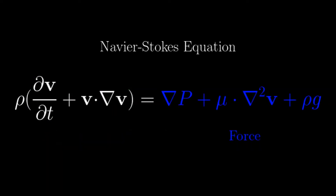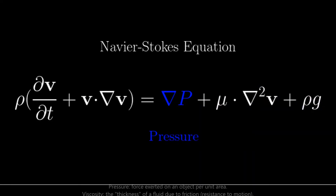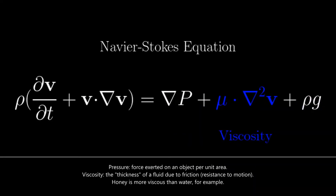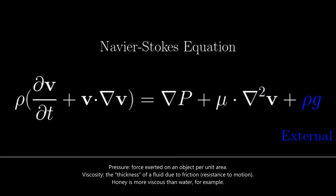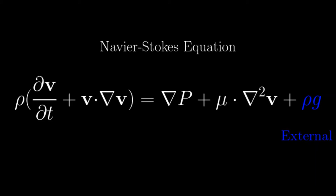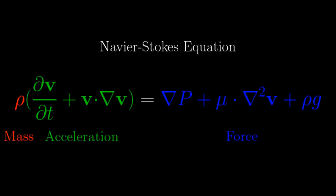On the right-hand side, we have all of the forces: the change in pressure, the viscosity of the fluid, and all external forces. Putting it all together, we get F equals M times A.